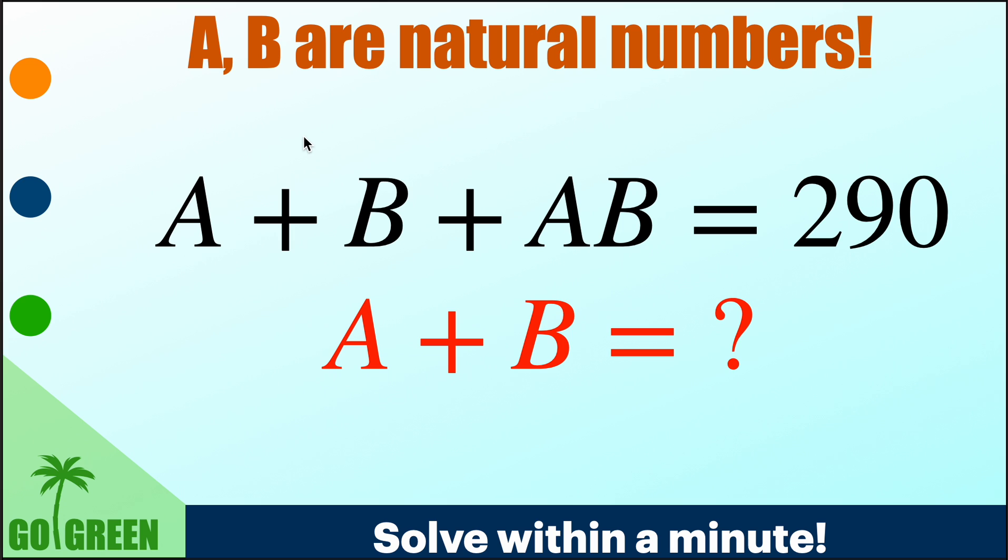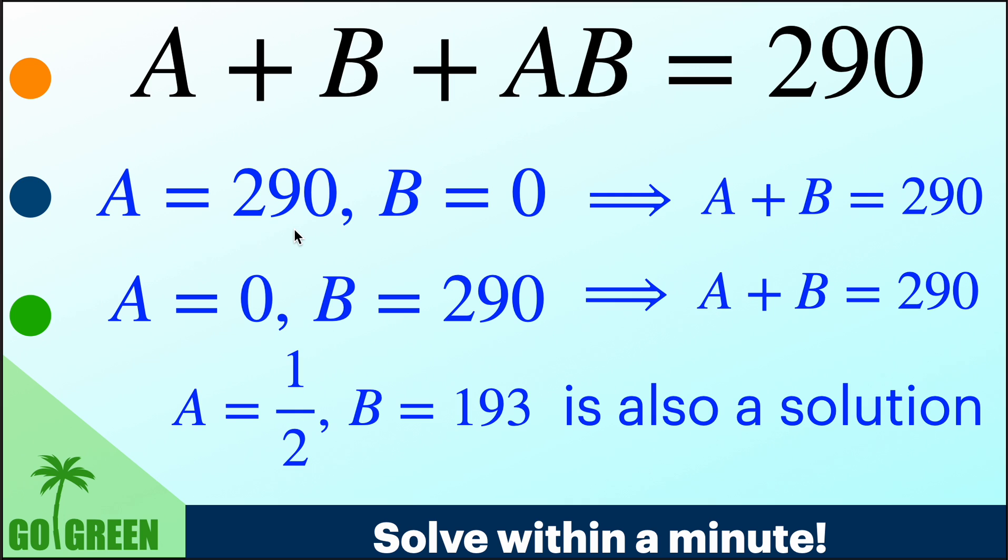And therefore, since A and B, they have to be natural number, in the first solution here, if you see A equal to 290 but B equal to 0. But the restriction is A, B must be natural numbers. B equal to 0 is not a natural number. Therefore, this solution is not acceptable. Though, this satisfies the equation.